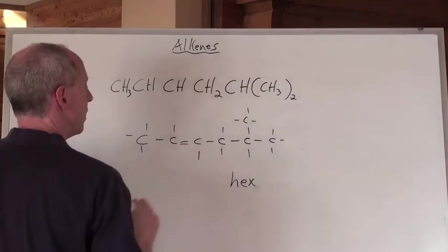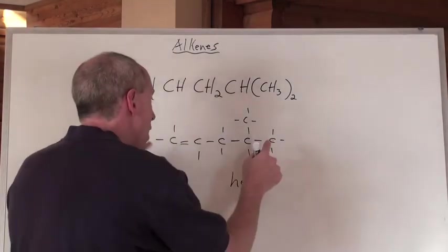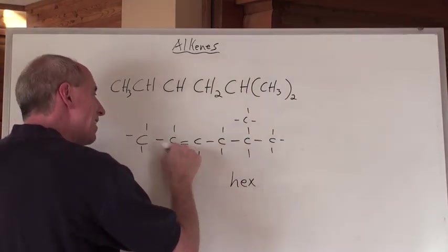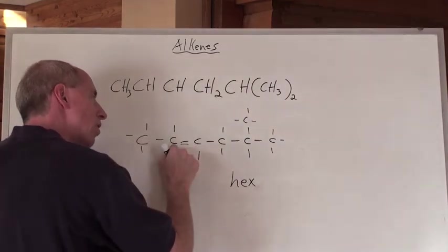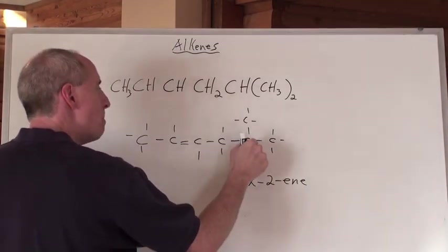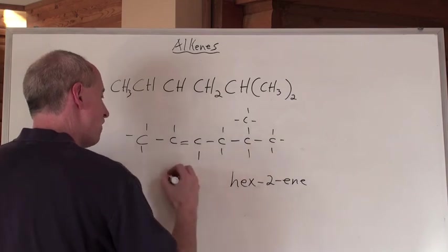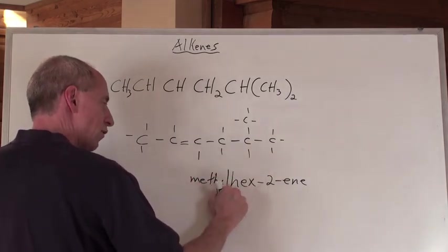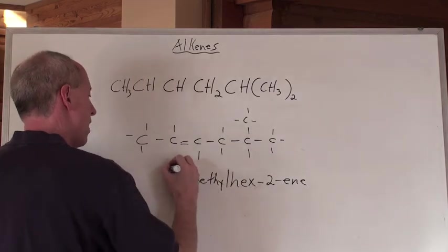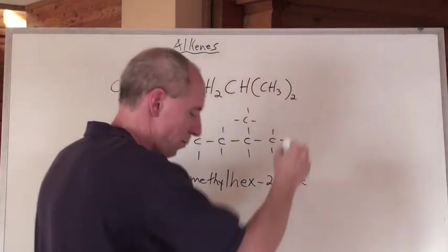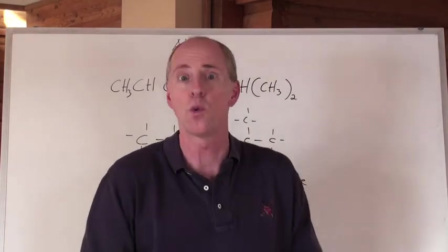Now this molecule looked like this, didn't it? Okay, so now it's a hex. The 'ene' is at the second carbon in on this end, so it's a hex-2-ene. The methyl ends up being on the fifth carbon. So there's a methyl branch. We put the branches in front, and then we put that number five there for 5-methylhex-2-ene. And that's what that would be from that condensed formula right there.